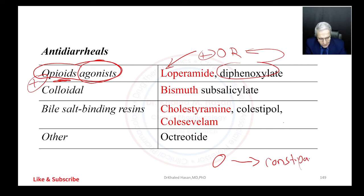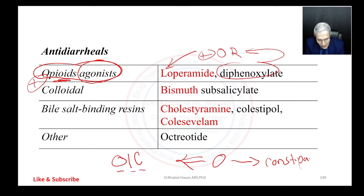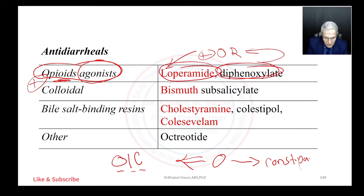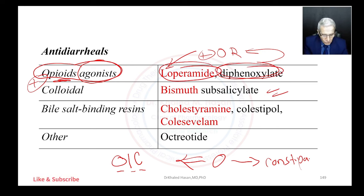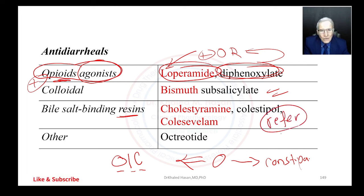This is the concept behind opioid-induced constipation (OIC). For patients with diarrhea, we use opioid agonists — loperamide and diphenoxylate — leveraging this effect. We also have bismuth subsalicylate, not very popular in clinical use but effective for diarrhea. Then we have bile acid-binding resins: cholestyramine, colestipol, and colesevelam. Finally, there is octreotide.